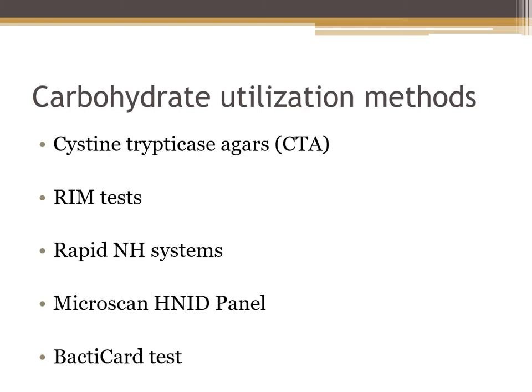There are a number of carbohydrate utilization methods to identify Neisseria species. We can use cysteine trypticase agar, or CTA sugars, which are sensitive to weak acid production — they start out pink and turn yellow as fermentation occurs. We can also use RIM tests, the Rapid ID method by Rimmel, or the Rapid NH system for Neisseria-Haemophilus identification, Microscan's special panel, or the Bactocard test — which we will be doing in lab — where four test circles impregnated with a chromogenic substance show color changes.